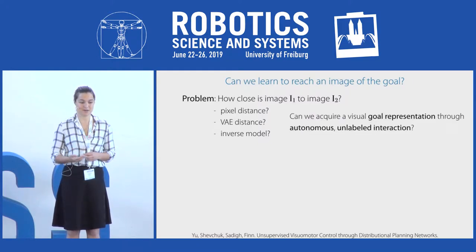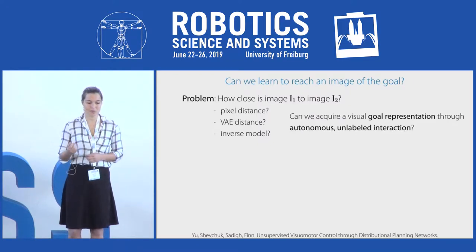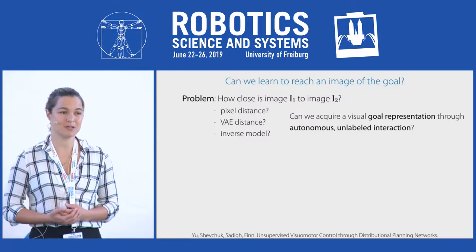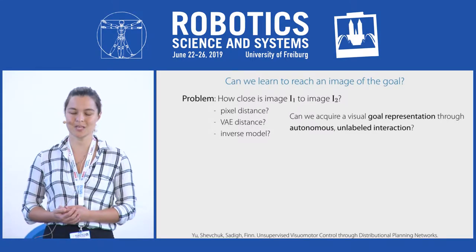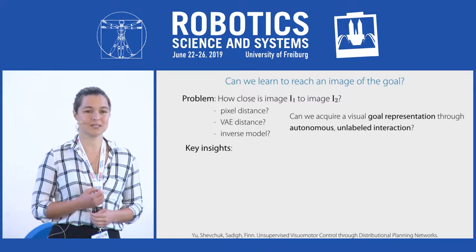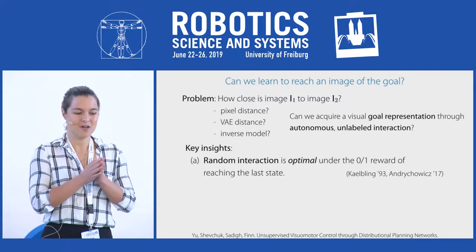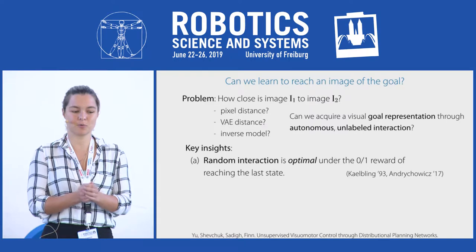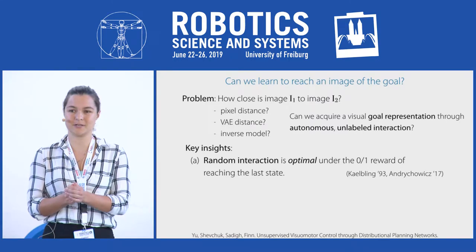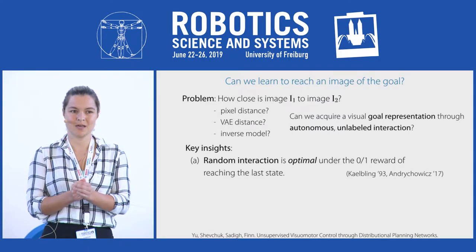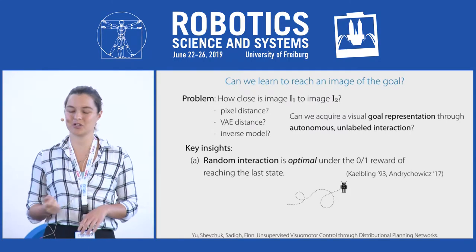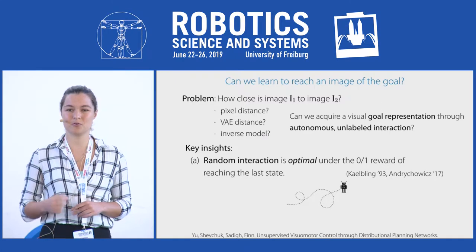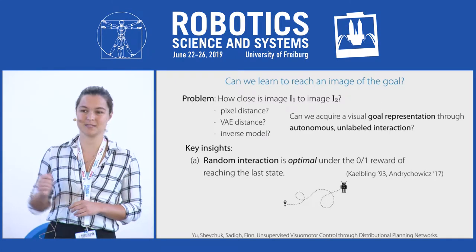An inverse model provides a control-centric representation but doesn't necessarily provide a good metric. In this work we aim to acquire a visual goal representation through autonomous unlabeled interaction. The first insight we use is that random interaction is optimal under the zero-one reward function of reaching the final state — if a robot takes a random trajectory, in hindsight the trajectory is optimal if your goal is to reach the state at the last time step.